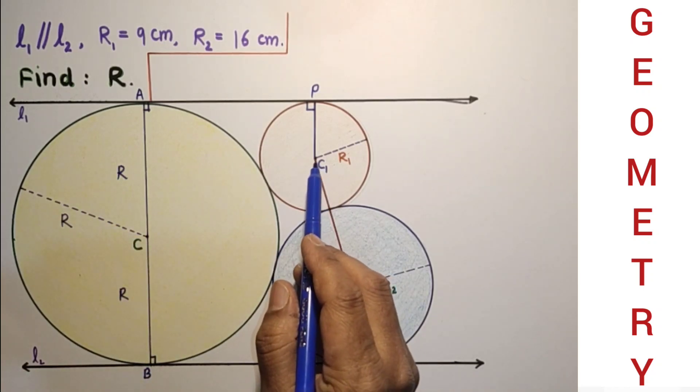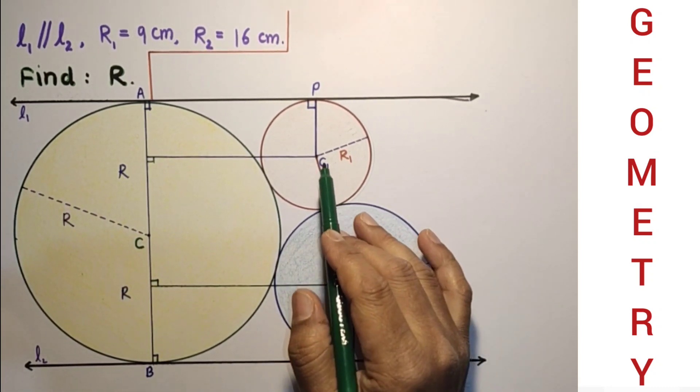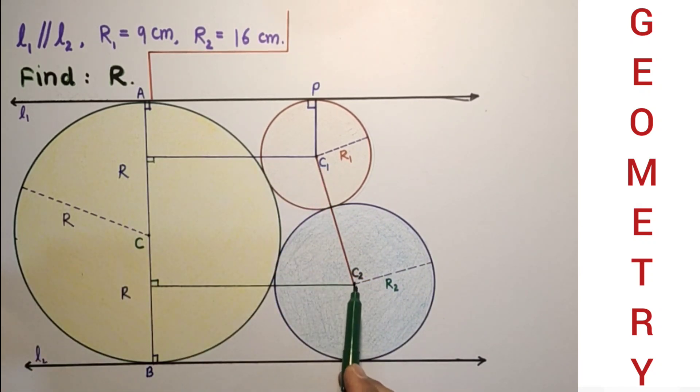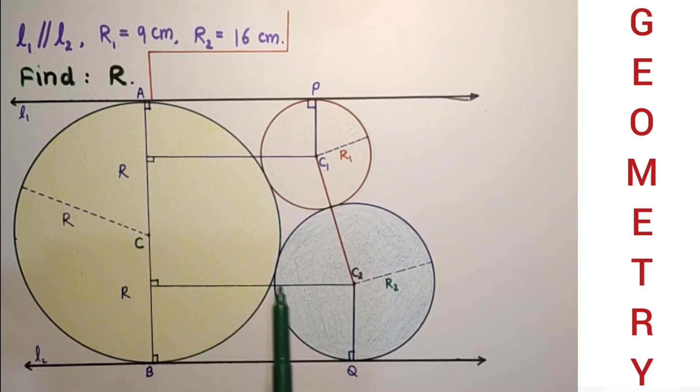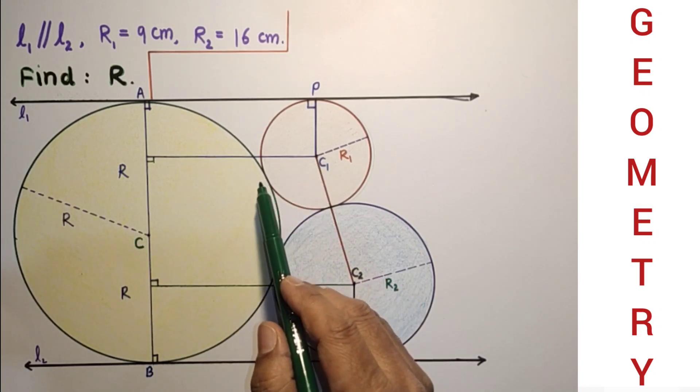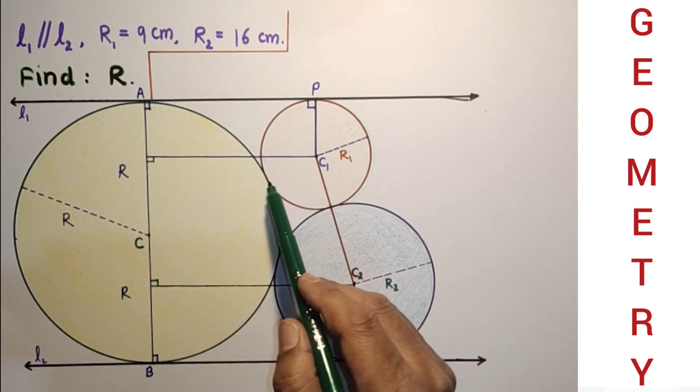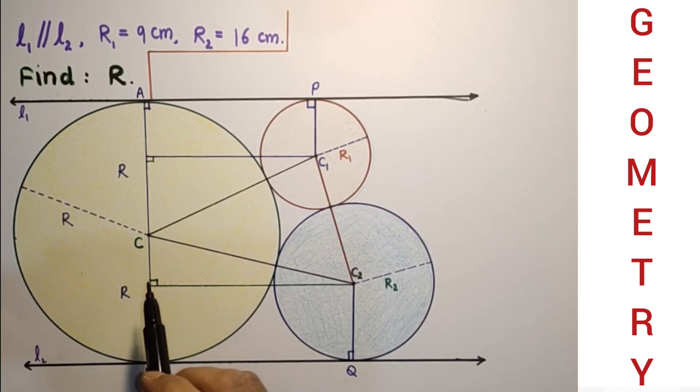From C1 drop perpendicular to this and from C2 drop perpendicular to this diameter. From center C1 this is drawn perpendicular to the diameter. Now joining these two centers and the point of contact will be in a straight line. Joining C and C1 will pass through this point of contact. C, C1 and C2 joint.